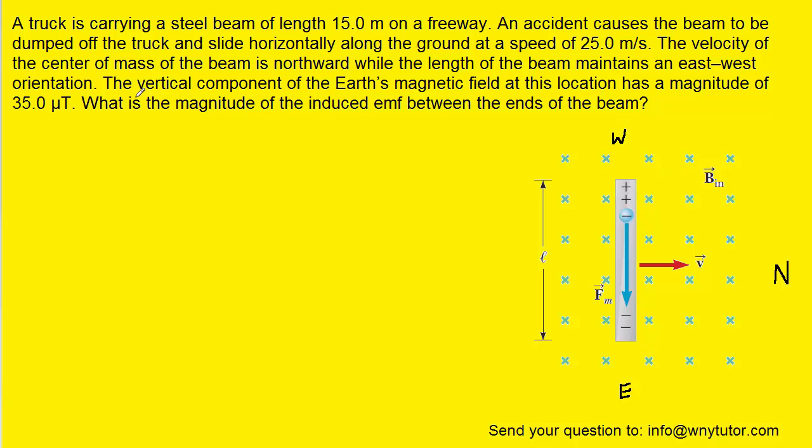And then the question notes that the magnetic field has a vertical component, and what that means is that it's pointing straight down. In this picture, since we have a sort of overhead view of the beam, the magnetic field would be pointing into the computer screen, and we've indicated that with these green Xs.